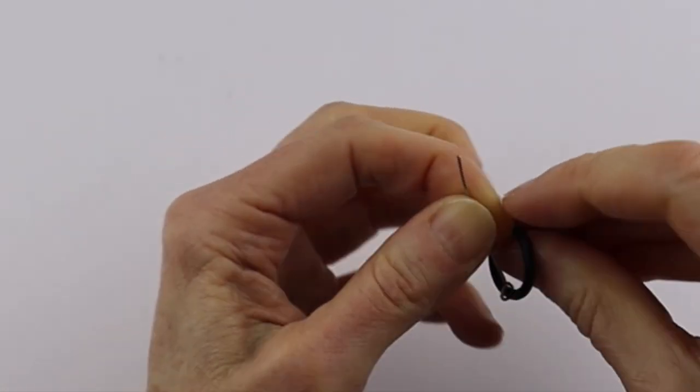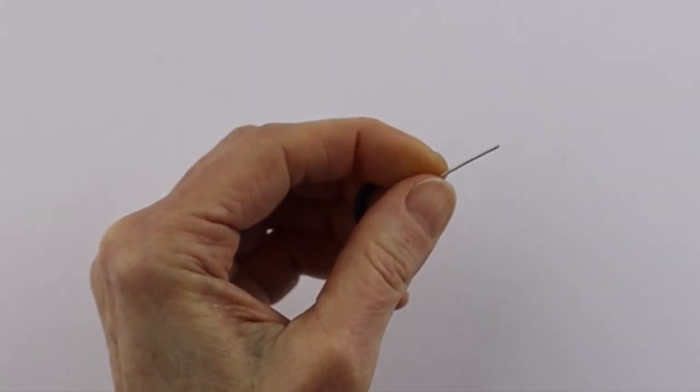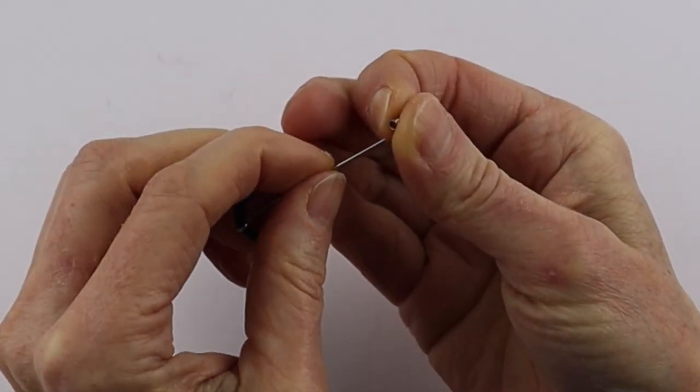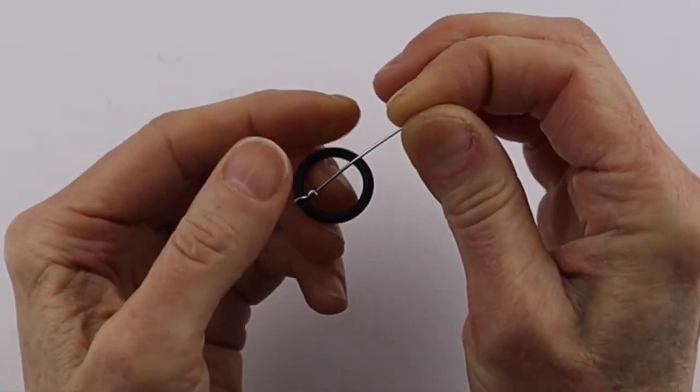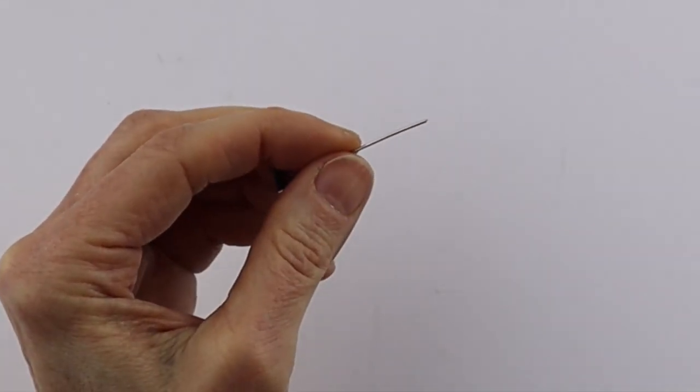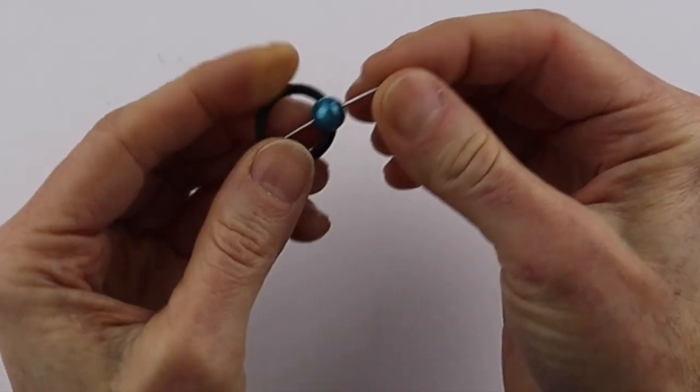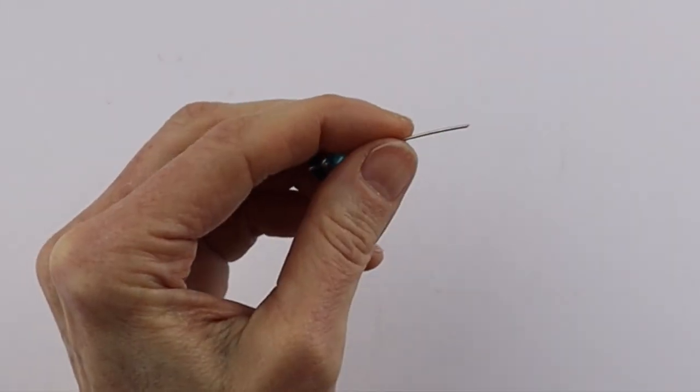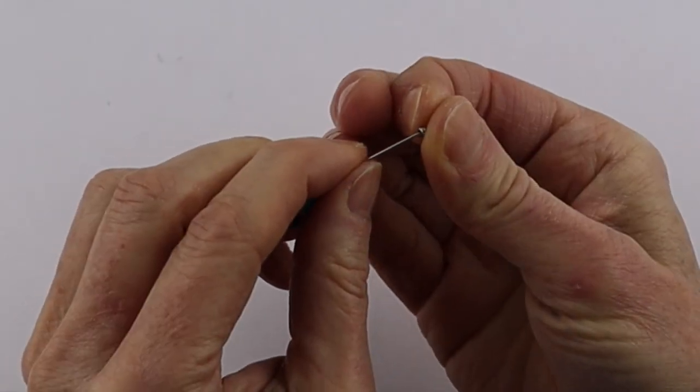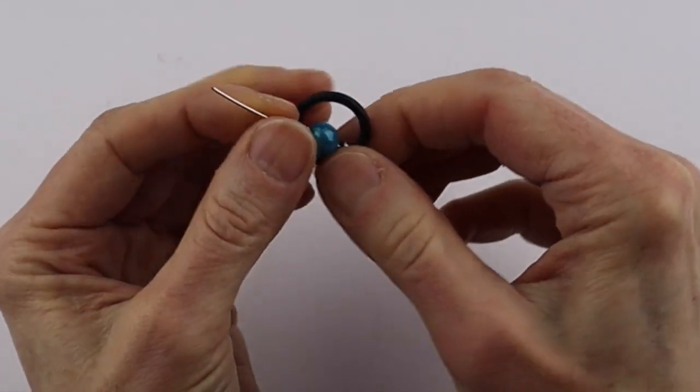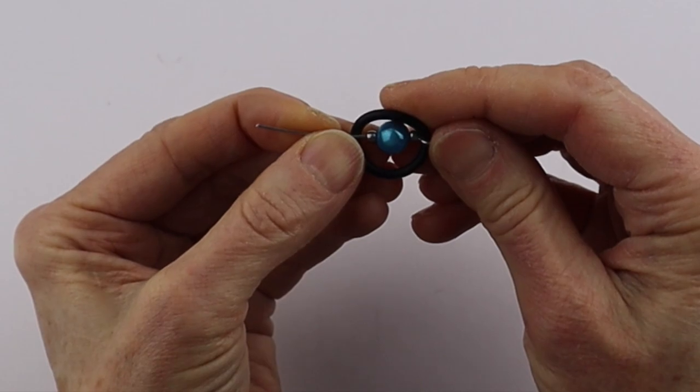Take your beads. We have the 3 millimeter crimp bead, but you can use any bead. I just like it because it's metal. We're going to use our 8 millimeter miracle bead and then another 3 millimeter bead. That's going to attach to the other side.